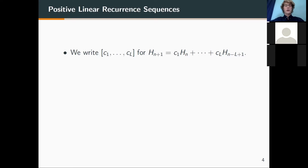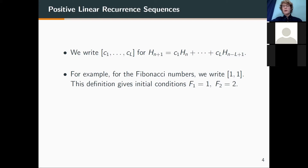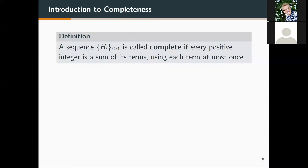For example, the Fibonacci numbers would be [1, 1]. It's also interesting to note that the definition of a PLRS gives F1 equals 1 and F2 equals 2 as initial conditions rather than the usual 1, 1. We now move to the definition of completeness.